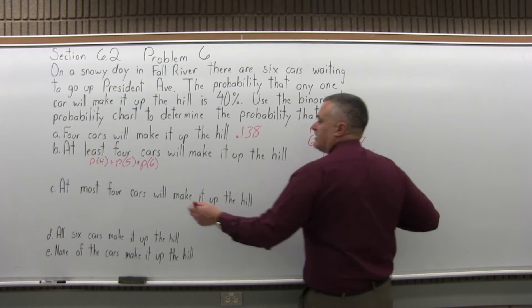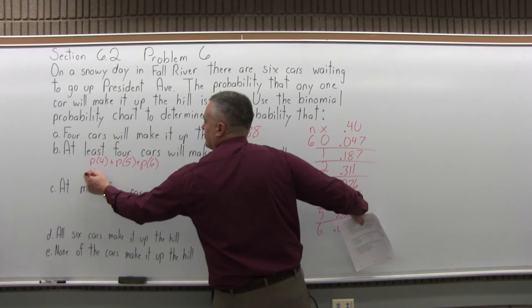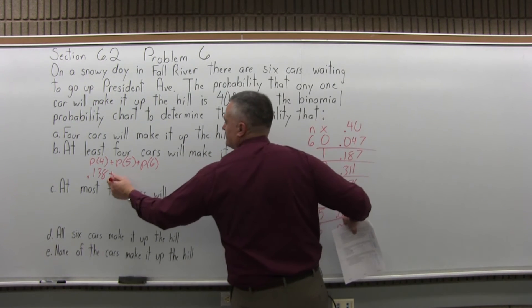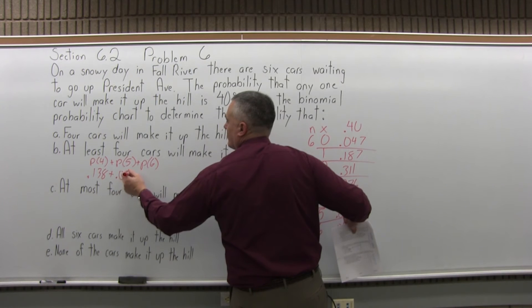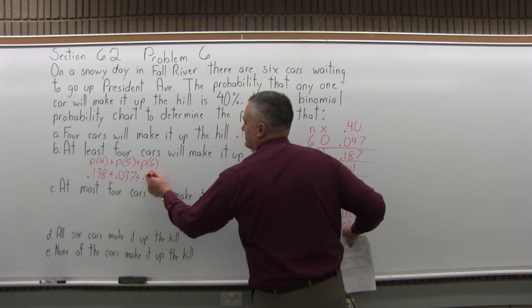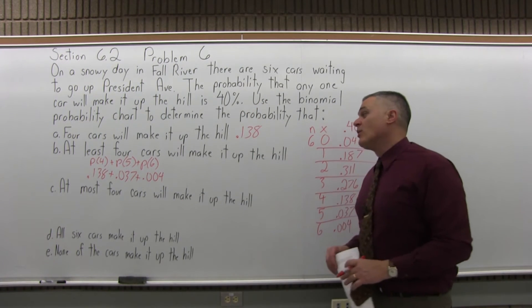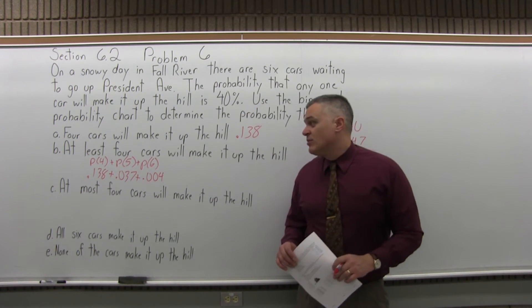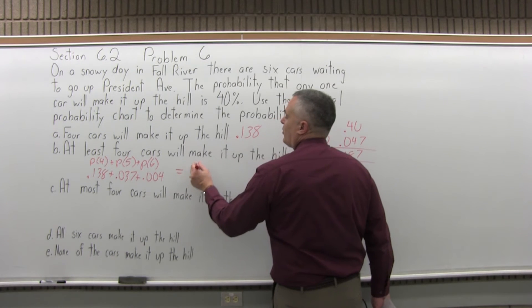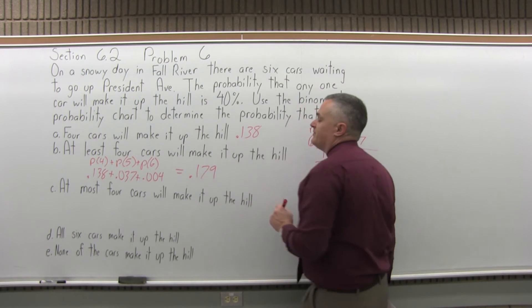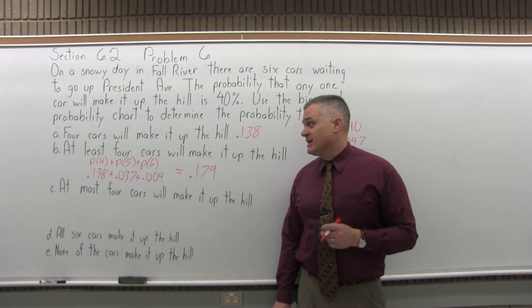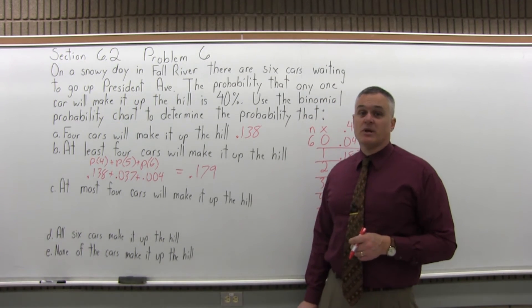For four, it's .138. For five, it's .037. And for six is .004. If you add .138 plus .037 plus .004, the answer you'll get is .179. With a little bit of round off, it's about an 18% chance, 18% probability, that at least four cars will make it up the hill.